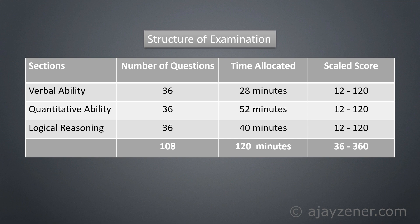Earlier in the NMAT examination, every question was worth three marks and there were 120 questions. Now there are 108 questions — 36 in each section — and scaling of marks will be done instead of a straight three marks per question. Each section is scaled from 12 marks to a total of 120 marks, so you can get marks anywhere between 12 and 120 per section. The minimum total score is 36 and the maximum is 360.